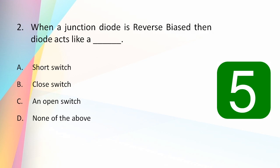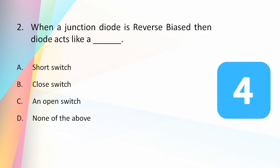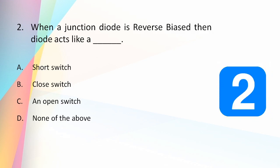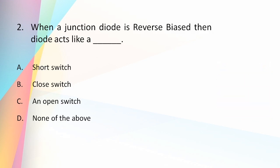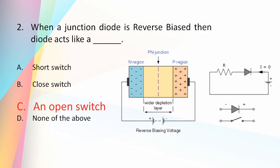When a junction diode is reverse biased, it acts as an open switch. The thickness of the depletion region increases and the diode acts like an open circuit or open switch, blocking any flow of electrons or current.